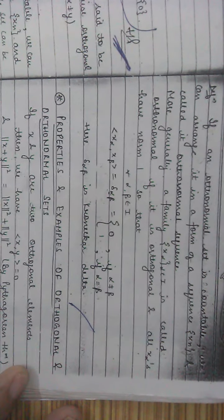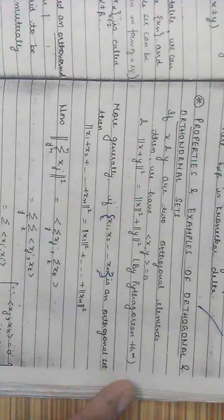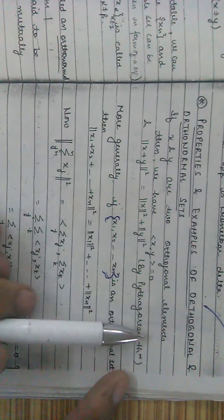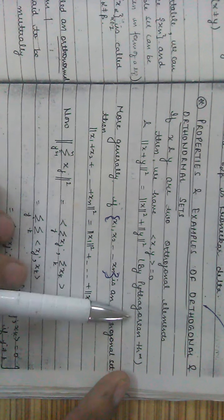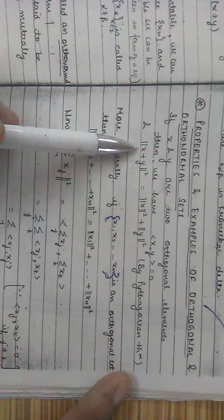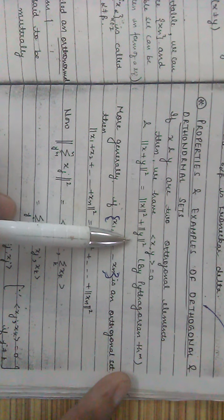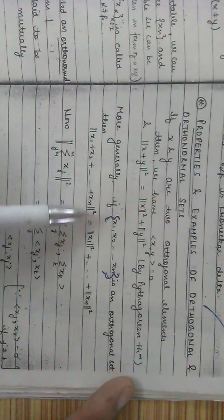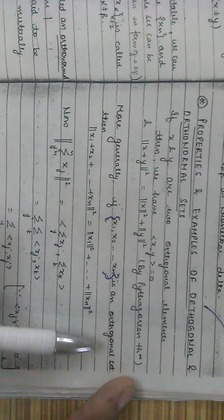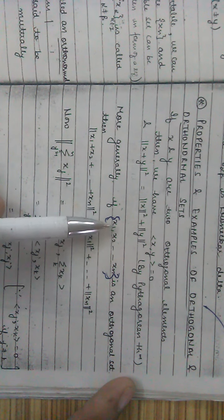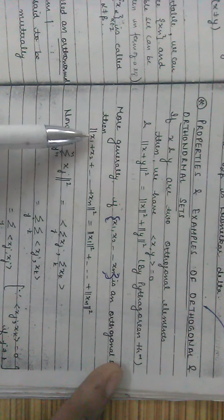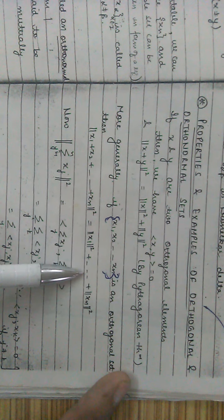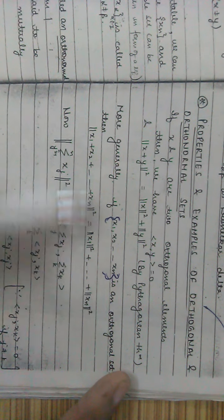Next we see some properties and examples of orthogonal and orthonormal sets. The first property, as already discussed: if we have two orthogonal elements X and Y, the Pythagorean theorem holds, meaning the norm squared of X plus Y equals the norm squared of X plus the norm squared of Y. We can generalize this for an orthogonal set: if we have an orthogonal set consisting of n elements X_1, X_2, X_3 up to X_n, then the norm squared of X_1 + X_2 + ... + X_n equals the norm squared of X_1 plus the norm squared of X_2 and so on up to the norm squared of X_n.